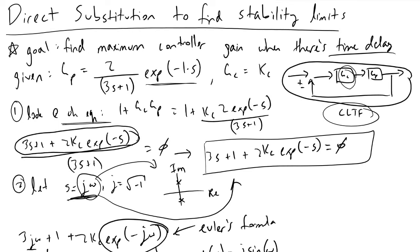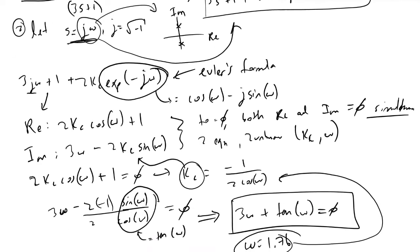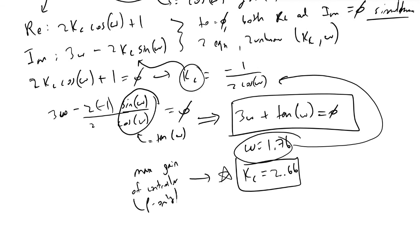The main thing to take away from this derivation is the fact that, unlike the other times when we use Routh array to determine the stability limits...